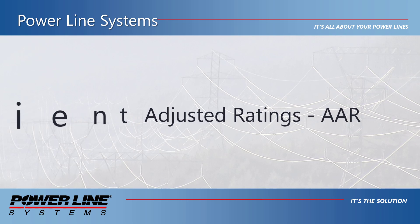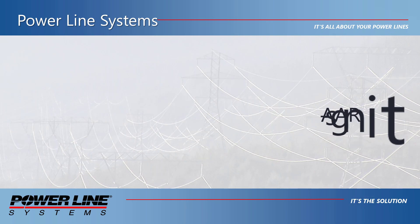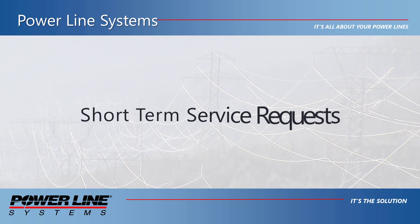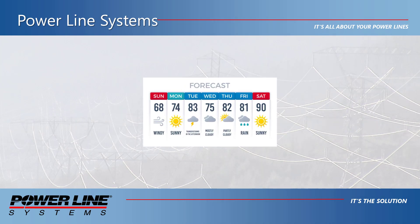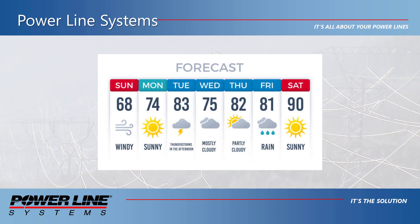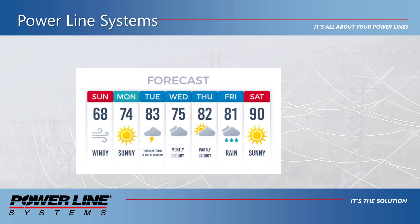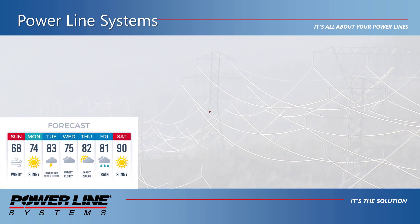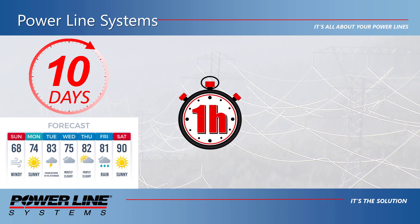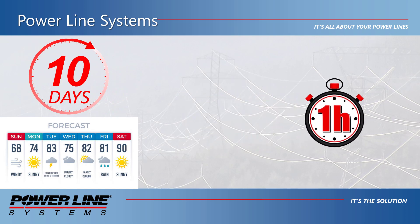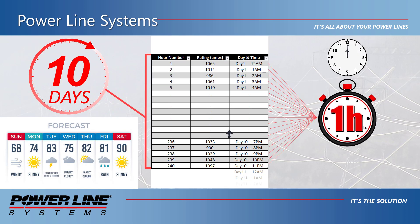Ambient adjusted ratings as specified in FERC Order 881 require that for short-term transmission service requests, ratings be calculated based on forecasted ambient conditions for a period of 10 days at a maximum of one-hour intervals, and these ratings must be updated every hour.